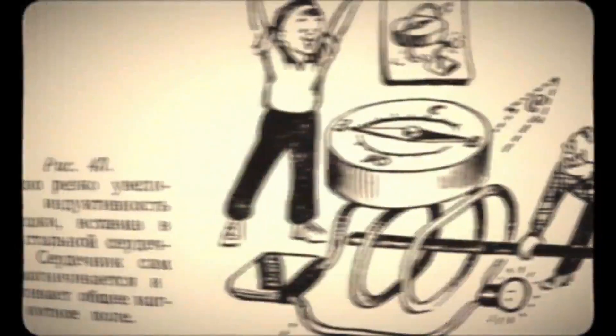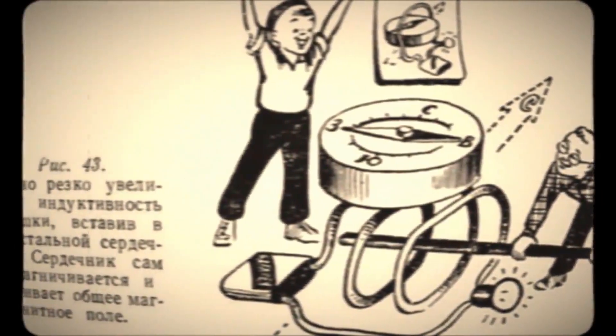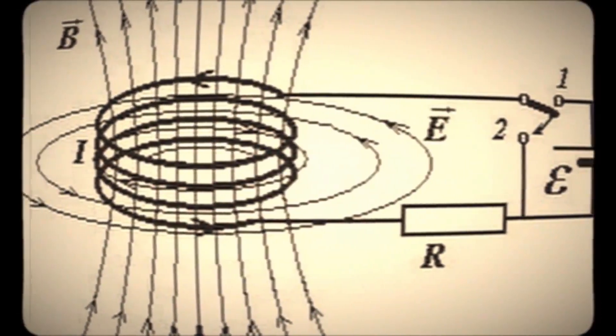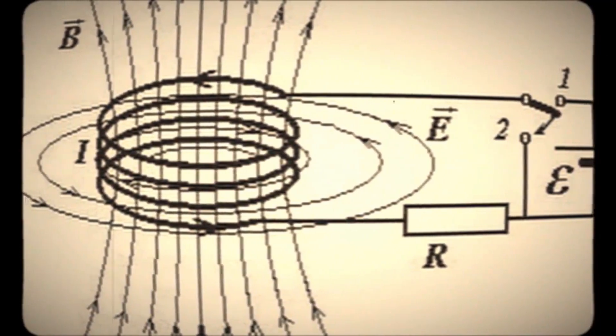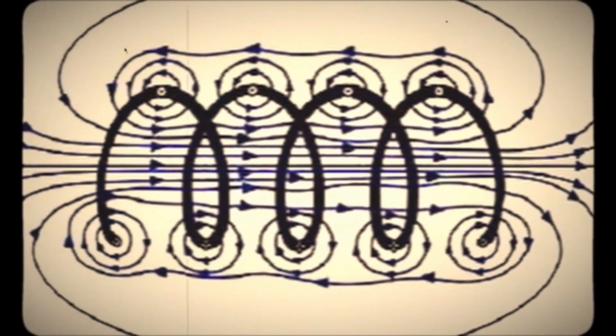We will consider everything in the simplest terms possible. The current flowing through the coil creates a field inside and around the coil. Energy is stored in this field, meaning similar to capacitors that store energy between their plates, inductors store energy in this field.